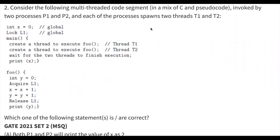This question was asked in GATE 2021 Set 2 and it is an MSQ question. Consider the following multi-threaded code segment in a mix of C and pseudo code, invoked by two processes P1 and P2. Each of the processes spawns two threads T1 and T2. They are asking which one of the following statements is or are correct.